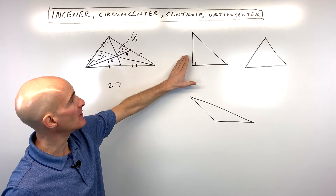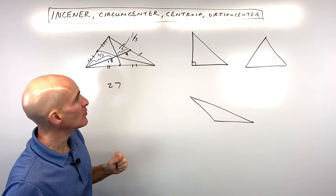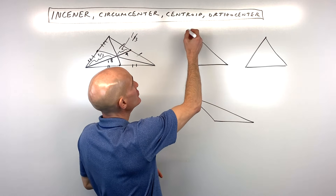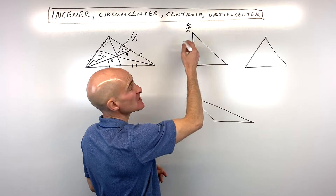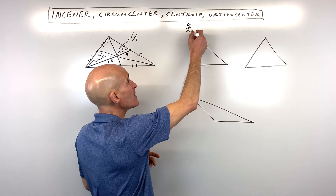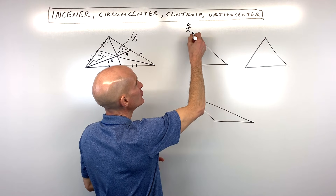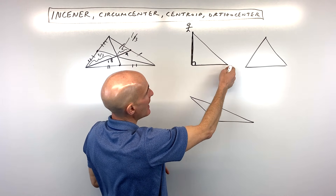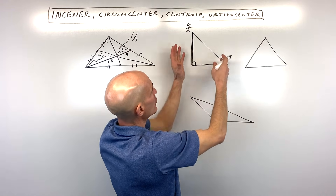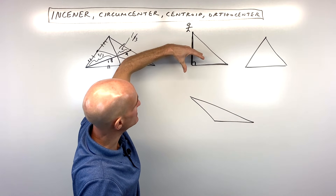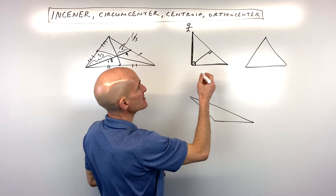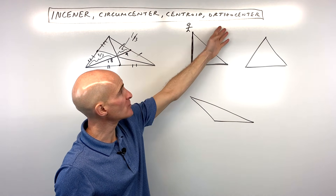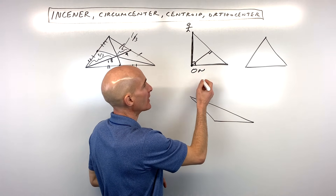Now talking about the orthocenter — that's where the three altitudes cross. It depends on the type of triangle. Think of a triangle as like a mountain: if you climb up this mountain and somebody says, how high above the ground are you? You would measure straight down — that's your altitude. So in a right triangle, you can see the altitude lies right along the edge of the triangle. Going from this vertex perpendicular to the opposite side is an altitude. Notice all three altitudes cross right at the vertex where the right angle is. So with the orthocenter, the three altitudes are going to cross on the triangle when it's a right triangle.